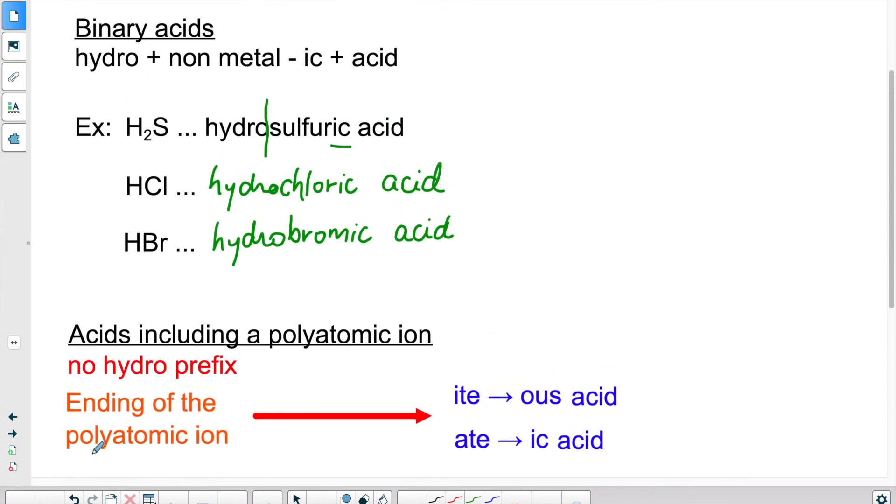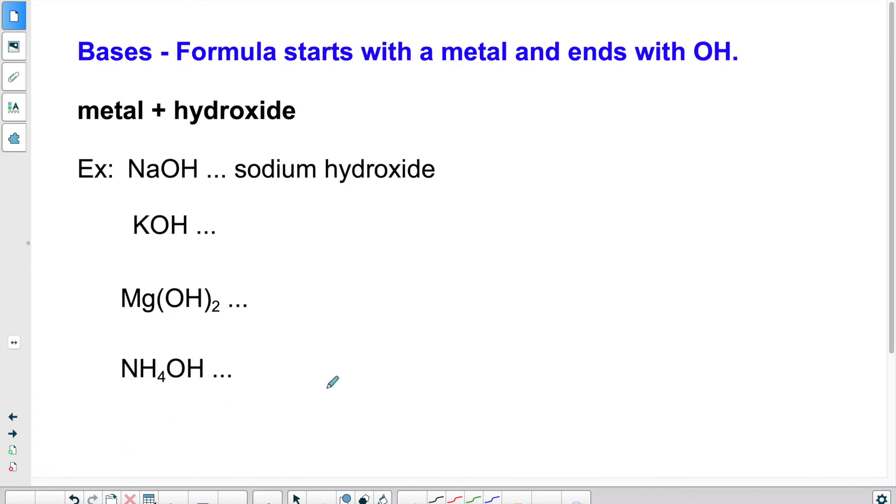If we move on to bases, you'll see it's slightly simpler. Bases, we know that they start with a metal and the formula ends with OH, which is hydroxide. We have the name of the metal followed by the word hydroxide. It's as simple as that.